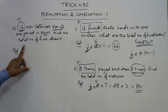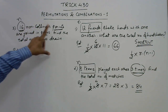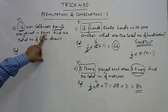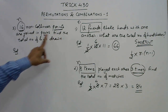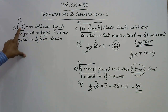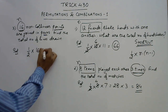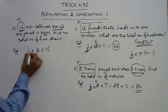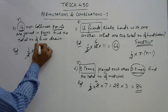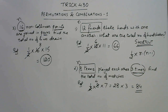Now let's apply the shortcut to the third question: 16 non-collinear points are joined in pairs, and we need to find the total number of lines to be drawn. Here n is 16, so the answer is half of 16 into predecessor of 16, which is 15. Cancel to get 8 times 15, which is 120. So 120 lines are needed to join 16 non-collinear points in pairs.